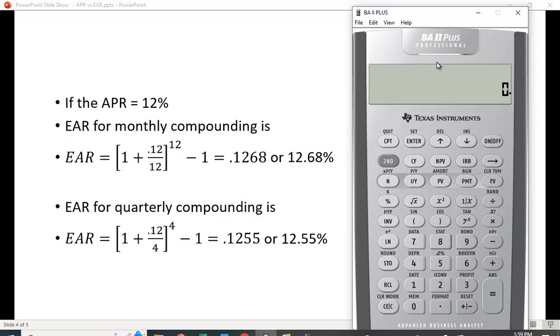If you have a financial calculator, there's a function that computes this for you. In the TI business calculator, it's ICONV, over the number 2 key. Hit second and 2, it'll ask you for the nominal rate—that's the APR. Type in 12 and hit enter. It shows 12 periods for 12 months. Scroll back to the effective rate, hit compute, and you get 12.68%. For quarterly, change this to 4, hit enter, go up and hit compute, and we get the same answer.